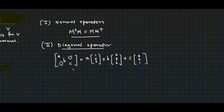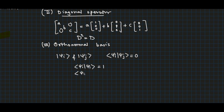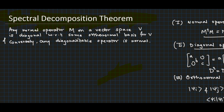Diagonal operators are idempotent, meaning D-squared equals D. Two states psi-i and psi-j are orthogonal if their inner product is zero, and orthonormal if their norms are equal to 1 and they are orthogonal. Any set of vectors following this condition are called orthonormal vectors, and if they form a basis of the vector space they are called an orthonormal basis.